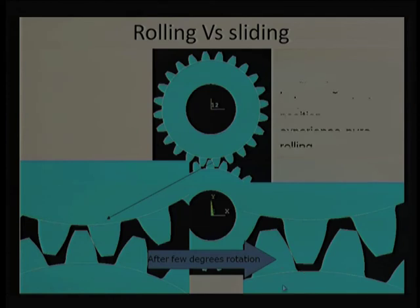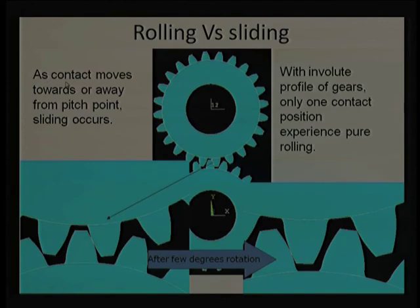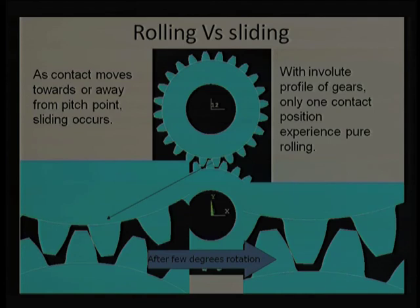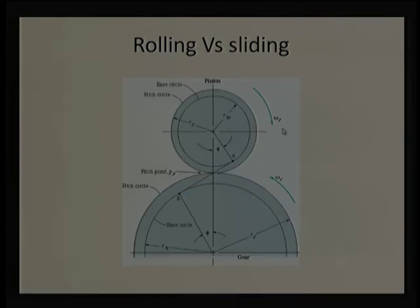However, considering the pitch circle: below the pitch circle diameter and above the pitch circle diameter, rolling happens only at the pitch circle. Points below or above the pitch circle will have some sliding — in reverse directions on either side of the pitch circle. This sliding generates friction, which is why we require lubrication. With an involute profile, only one contact position — the pitch point — experiences pure rolling. As contact moves away from the pitch point, sliding increases, reaching maximum at the extremes, and returns to zero as it passes through the pitch point again.